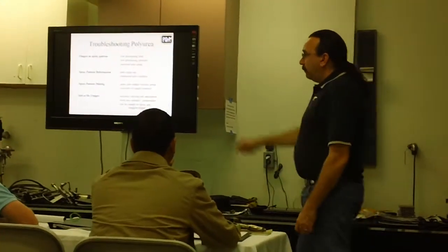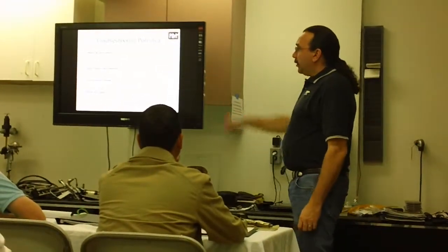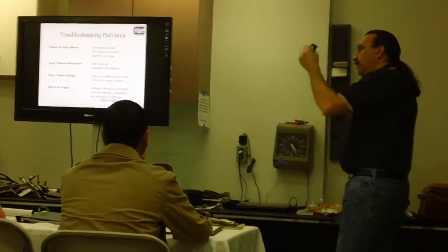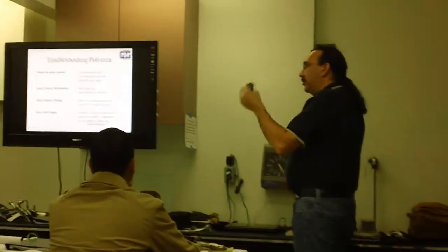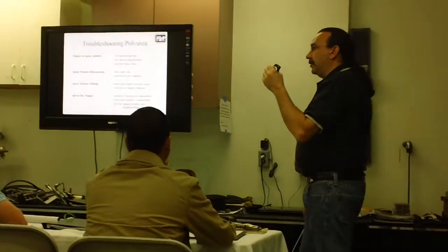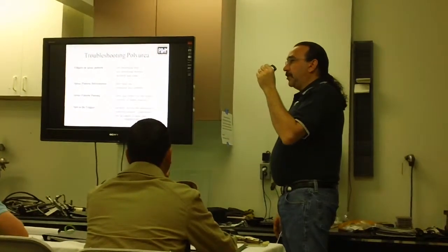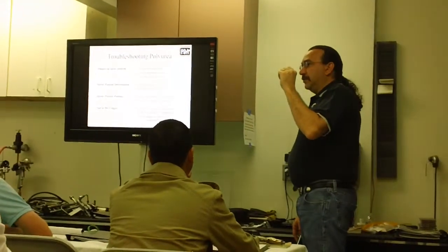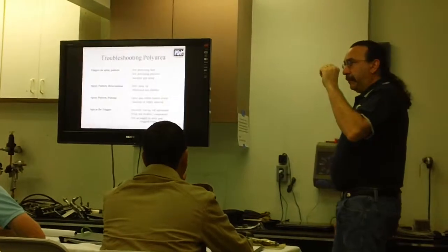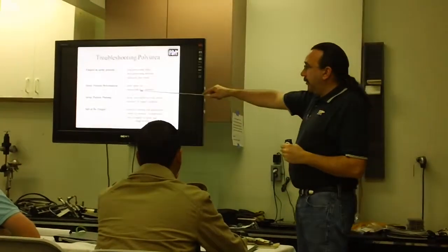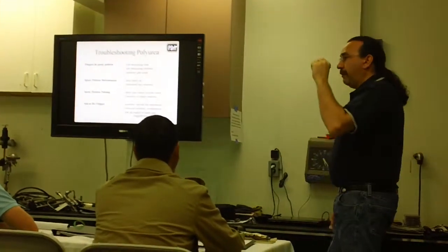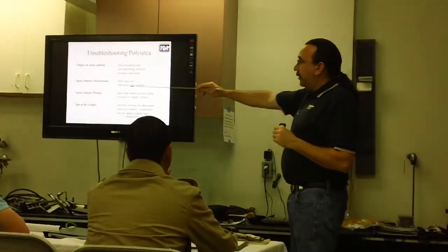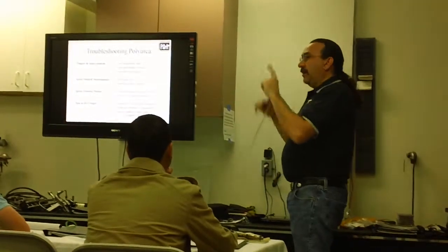We have that spray pattern deformation, dirty spray tip. It could be due to some obstructed mix chamber. Remember, if we have an obstructed mix chamber, you can also see it on your pressure gauges. How do we make pressure? By restriction. If we have an obstructed port in our mix chamber, it's going to be partially restricted. So that side that is obstructed will be running at a higher pressure than the other side.